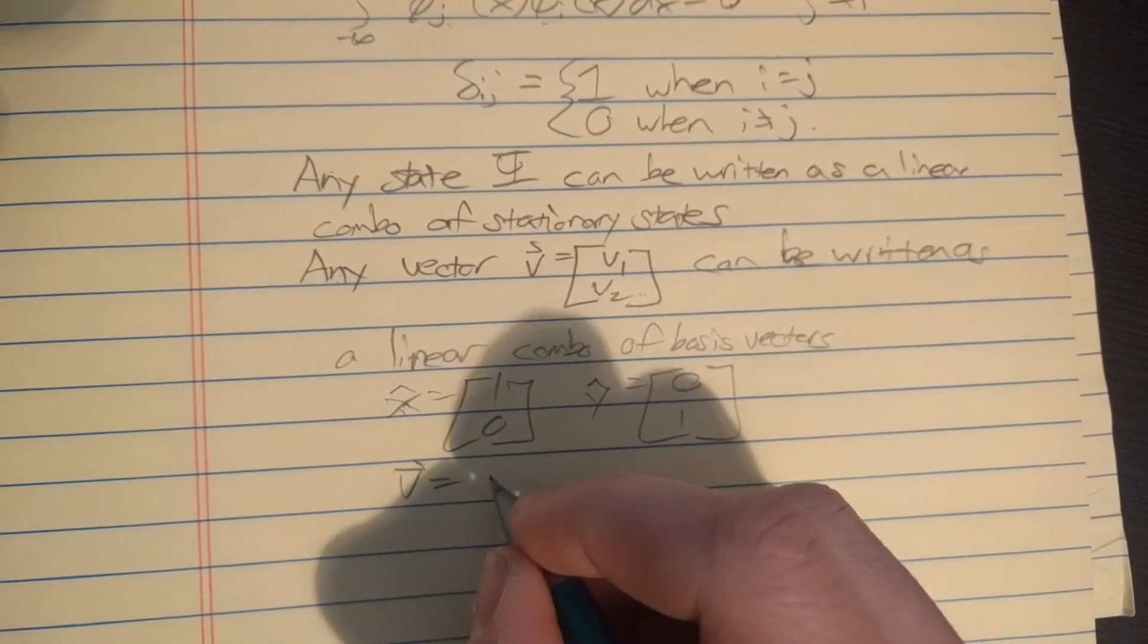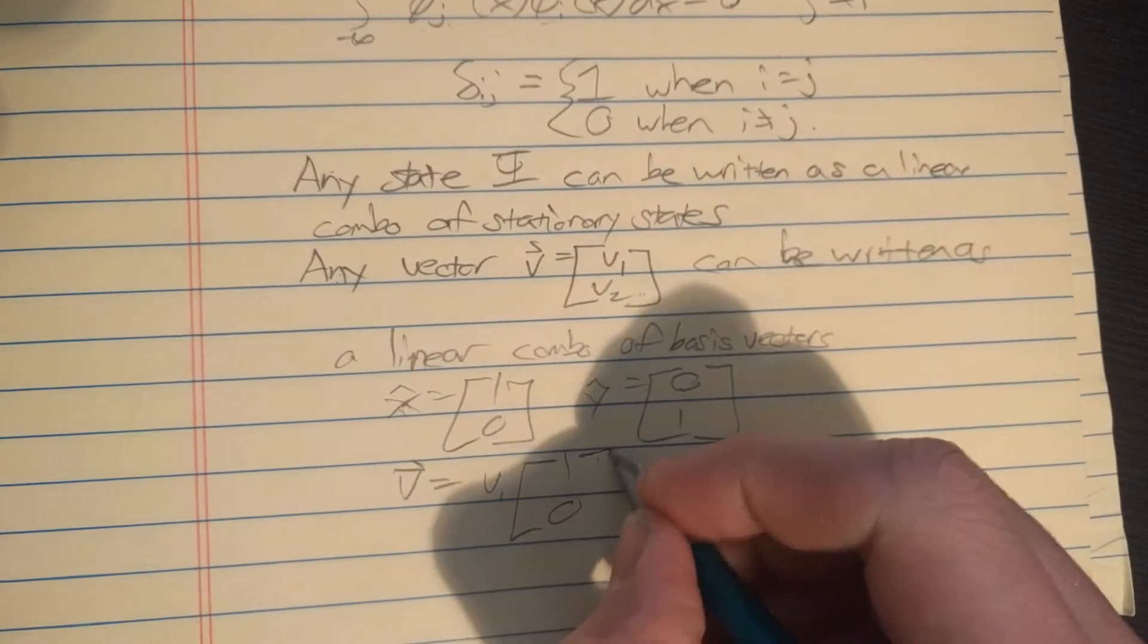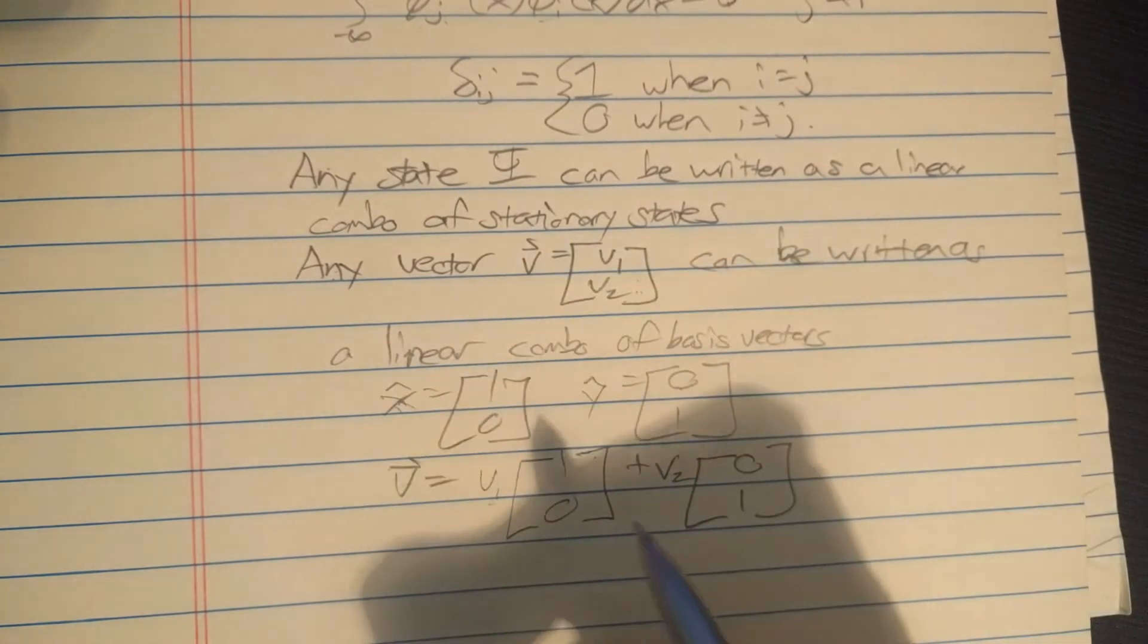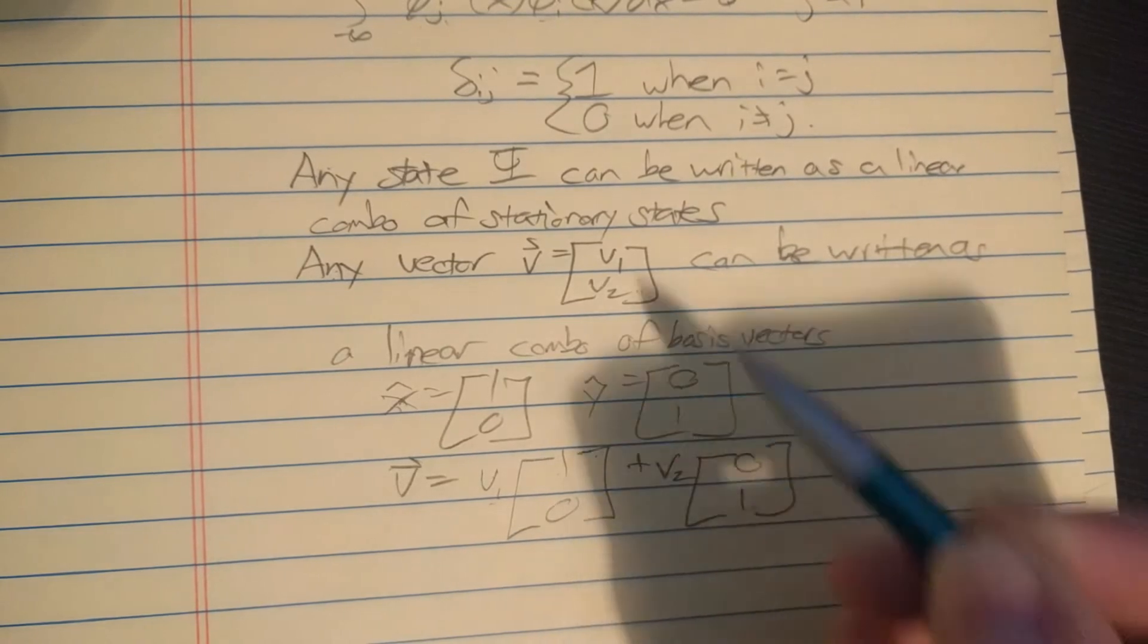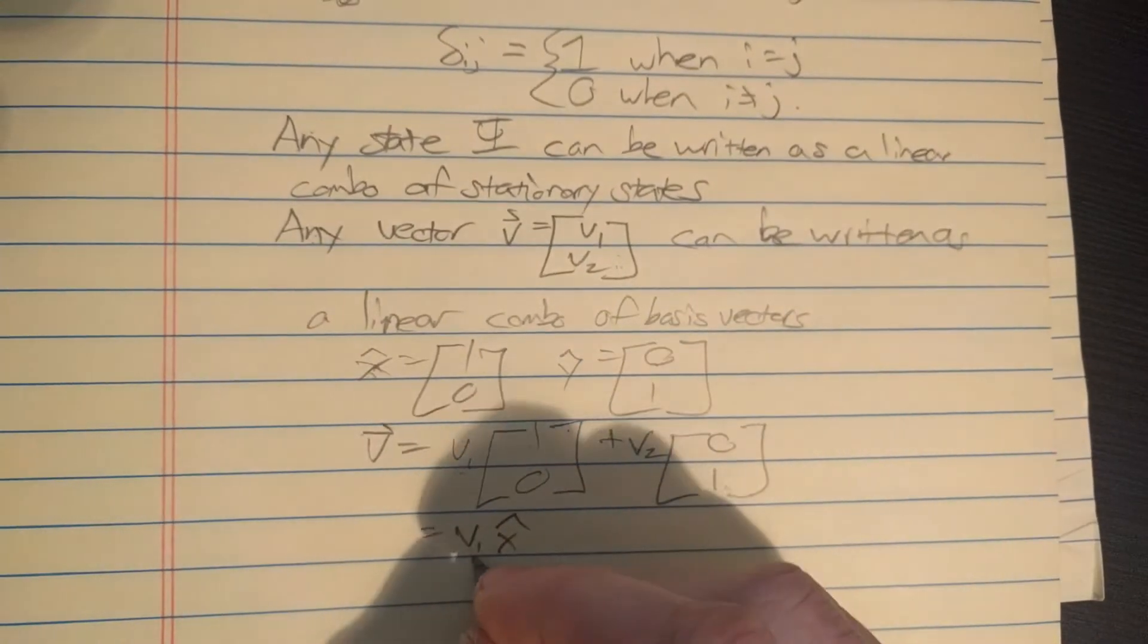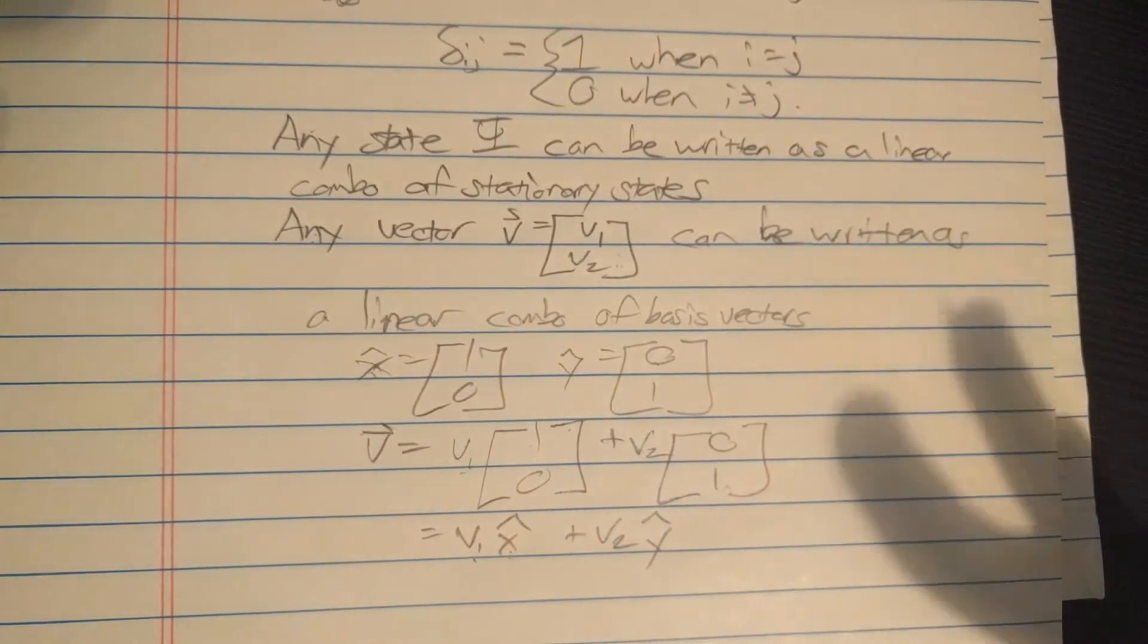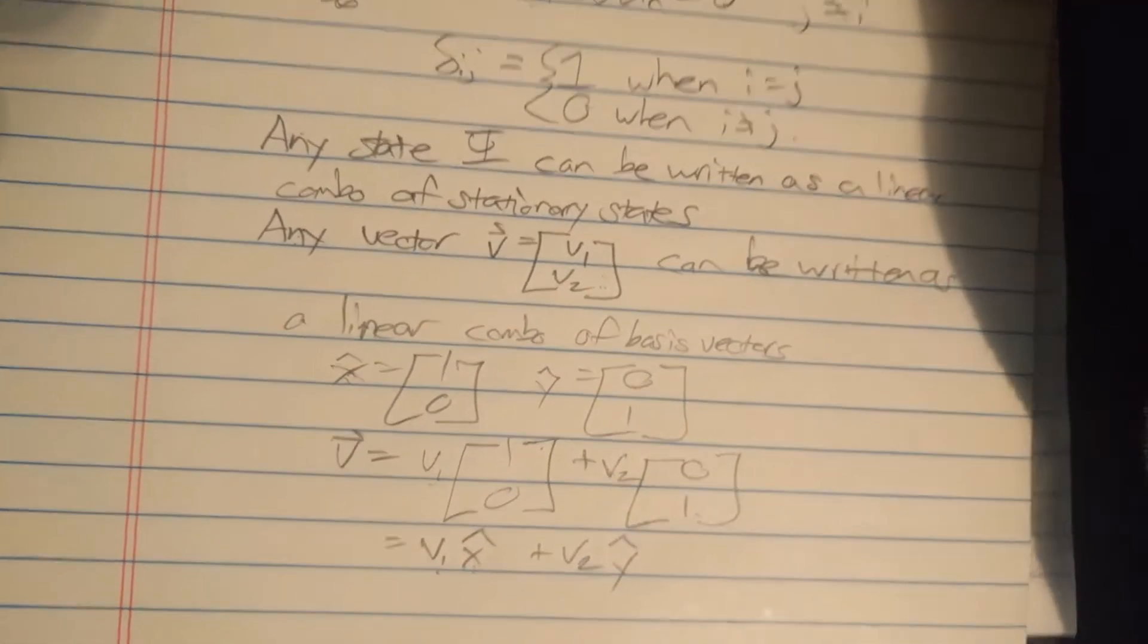And the other one is y hat equal to zero one. So you can write v in terms of these as v equals v1 times x hat plus v2 times y hat. These x hat and y hat, that's what is meant by the basis states - in this case I'm just calling them basis vectors.